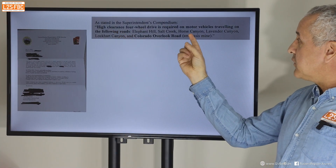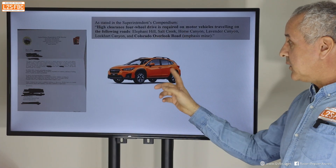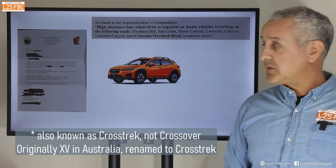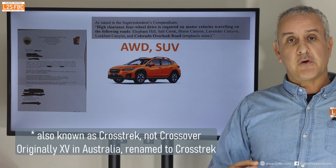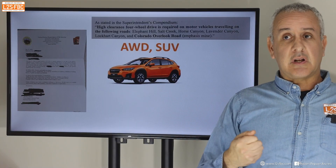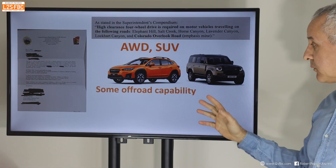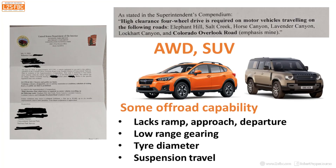That particular letter to the Subaru owner said: 'A high-clearance four-wheel drive is required on motor vehicles traveling on the following roads.' The vehicle the driver had was the Subaru XV, also known as the Crossover. It is an all-wheel drive, it's an SUV, and technically a four-wheel drive — but we wouldn't really call it that because it doesn't have the clearances and traction aids a true four-wheel drive normally would, unlike a Land Rover Defender.